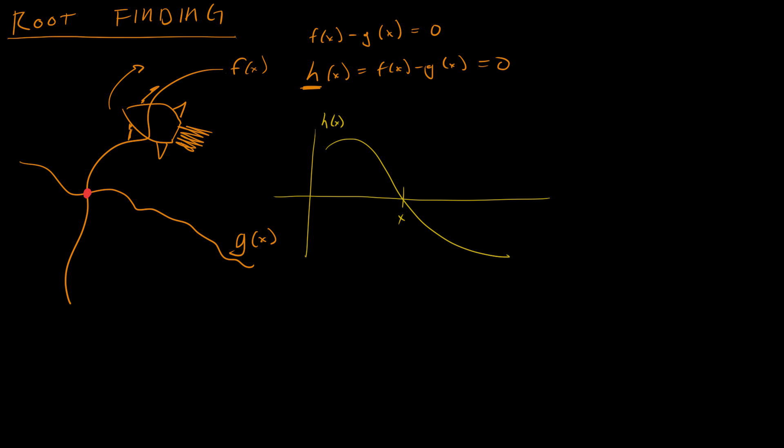And we already have an estimate. We can just use a very simple estimate. We can pretend that this is regular projectile motion. And we can pretend that this is a more or less flat surface. And we can get an estimate that way. And let's say our estimate is right here, x naught.